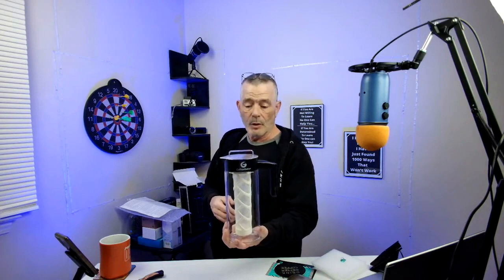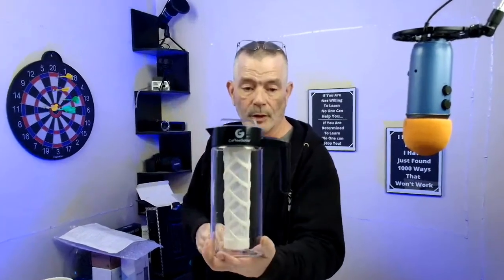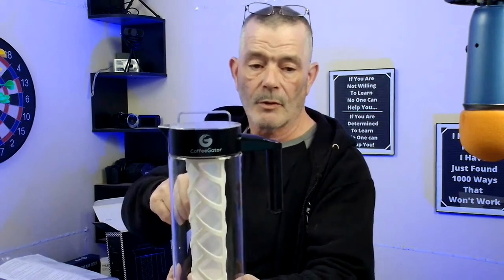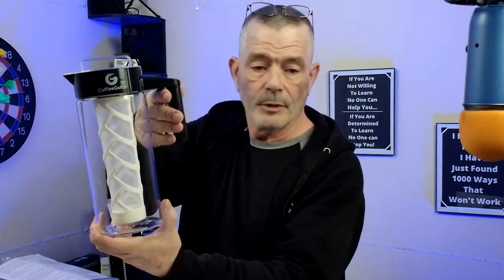That's the Coffee Gator Cold Brewer. You want to get a good close look at that. Pretty cool. It says you don't have to take the grounds out - you can actually pour it with the ground coffee still in there. All right, there you go.